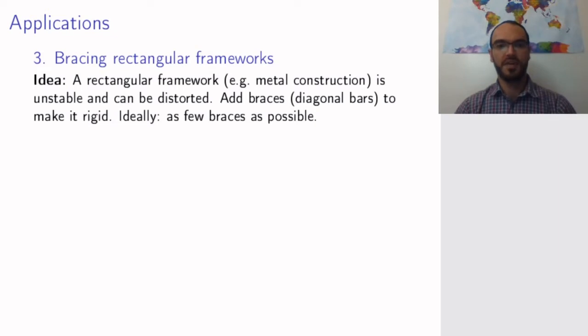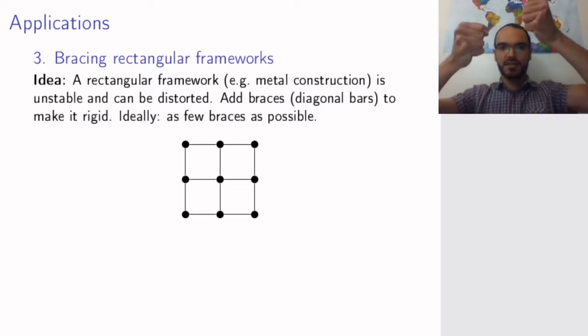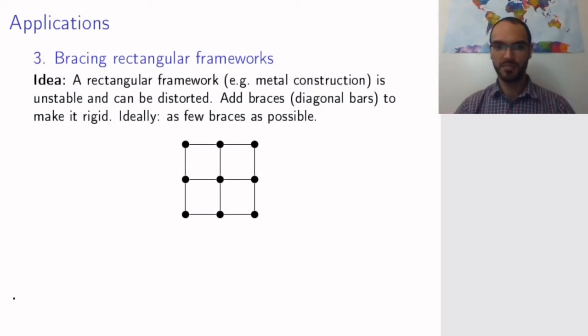The idea is that you have a rectangular framework like a metal construction, but such a construction is unstable, so you want to fortify it to make it rigid. For example, you have something like this and I can distort this thing by pulling parts down, and that's no good if this brace is supposed to support some structure in a building. I want to make sure that all angles remain right angles at all times.